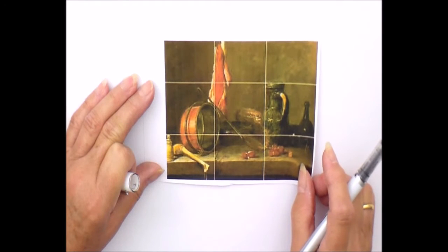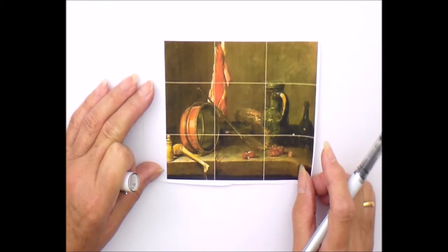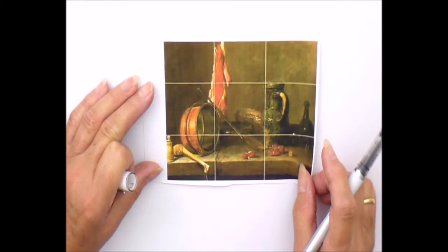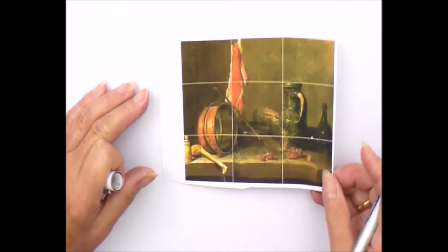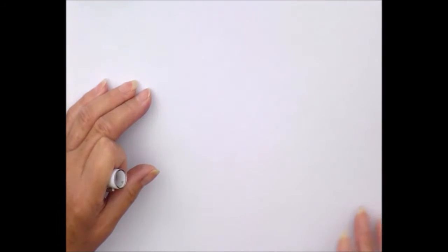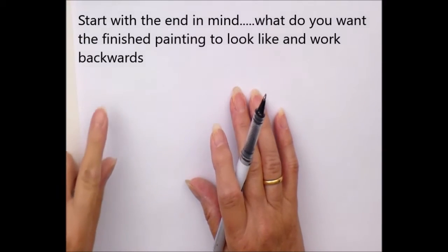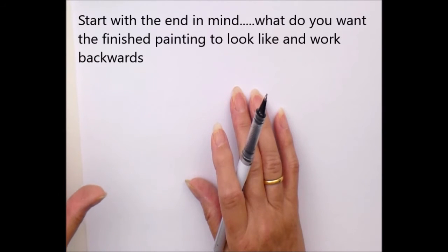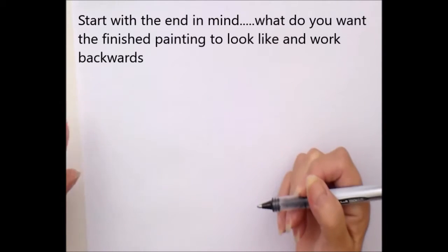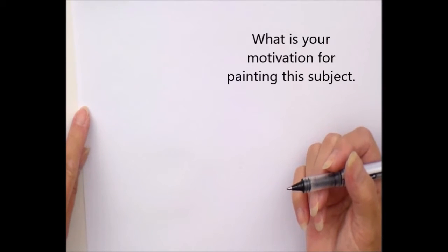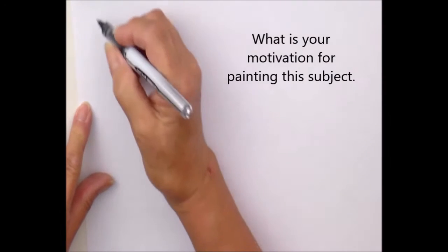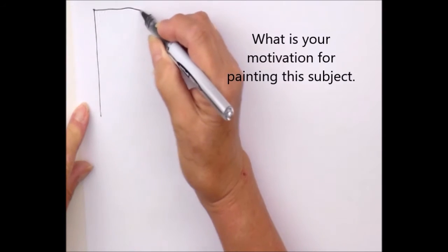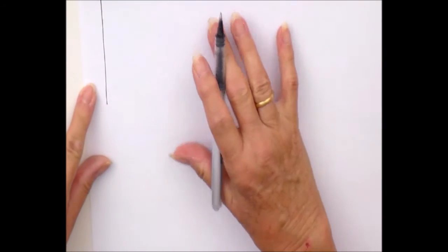Composition is a question of how you put things together. When you're looking at doing a painting, whether you're working from a still life or from a photograph, try and start with the end in mind — in other words, envisage it mounted, framed on the wall. How will it look? You have to ask yourself: what's my motivation for painting that picture? I always do a lot of little sketches.